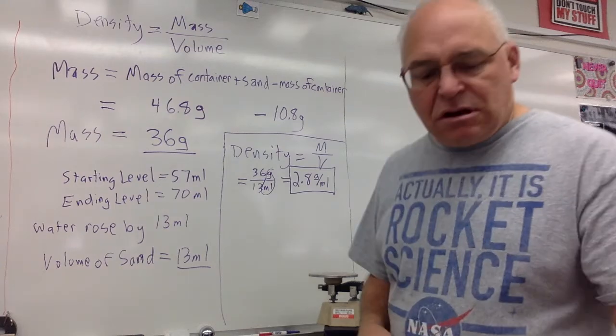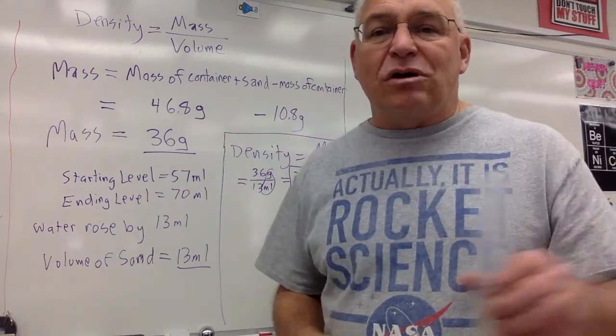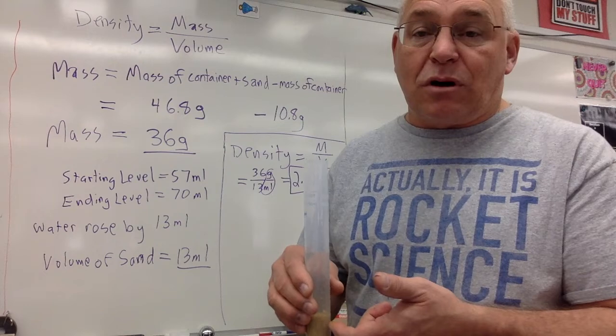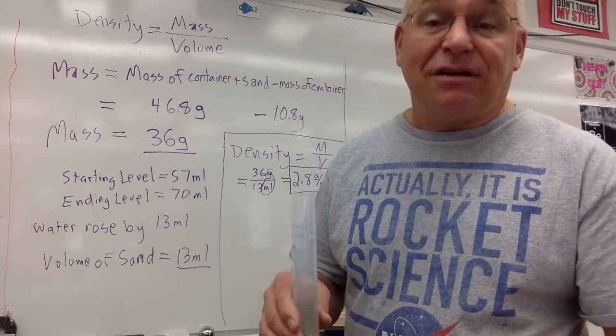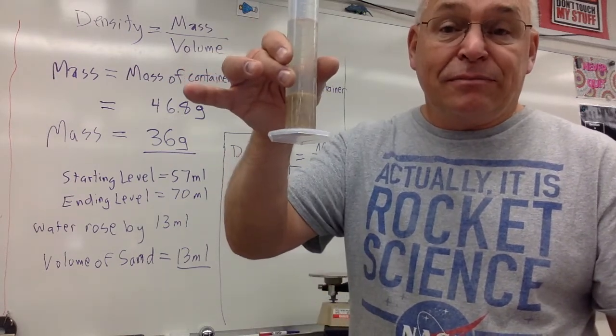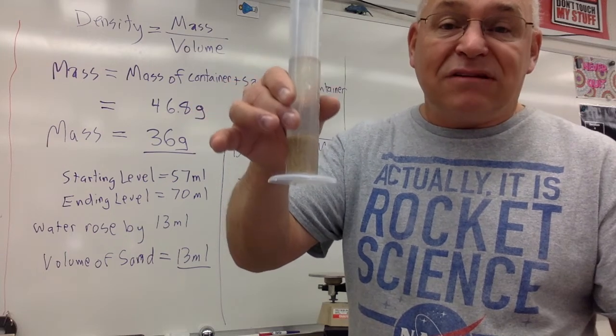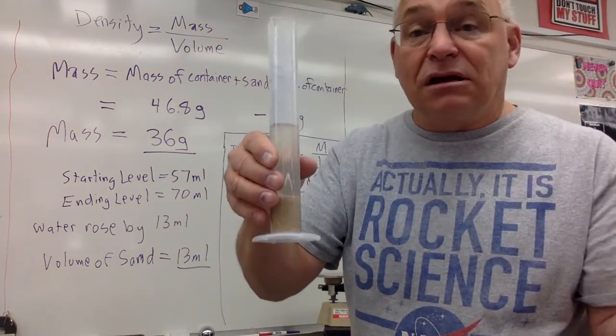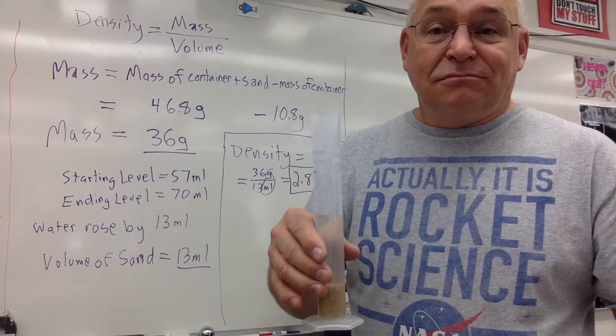We get 2.8 grams per milliliter. That means it's more dense than water, which means when you put it into the water, it's going to sink. There you go. Finding the density of an object that is irregular. Thank you.